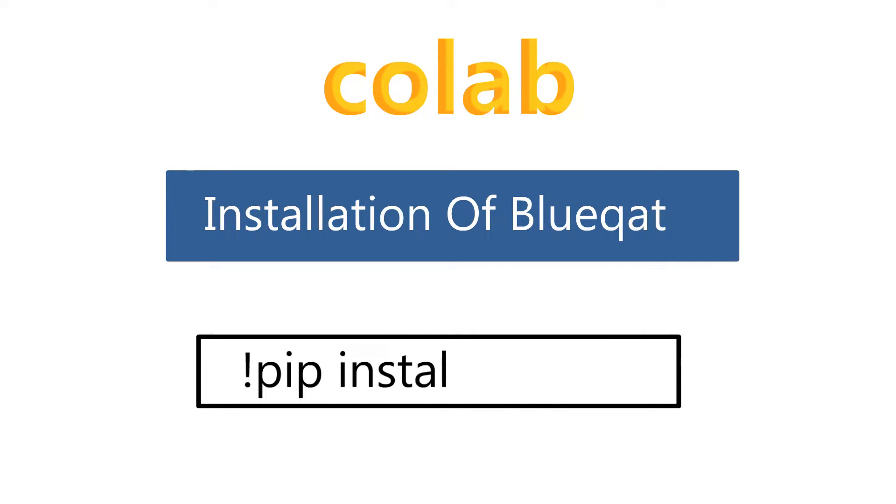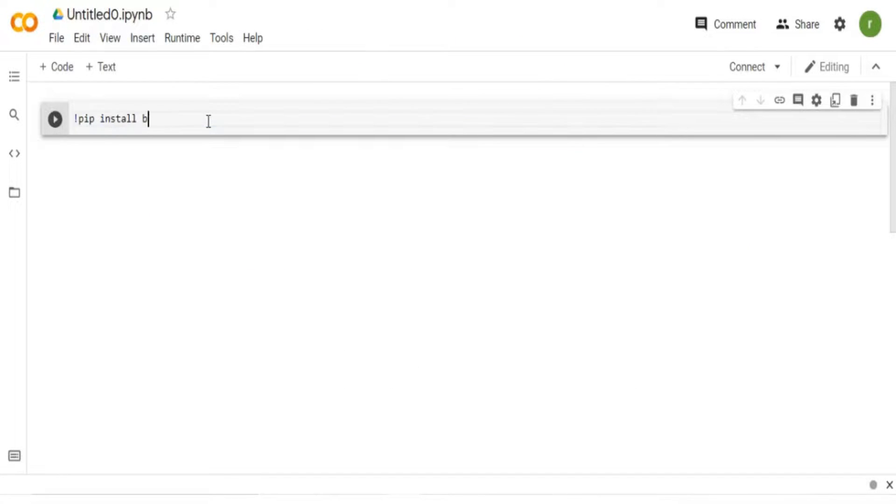Exclamation mark pip install blueqat. Type the code that was shown earlier in Google Colab, then click on play button and Blueqat will be installed.